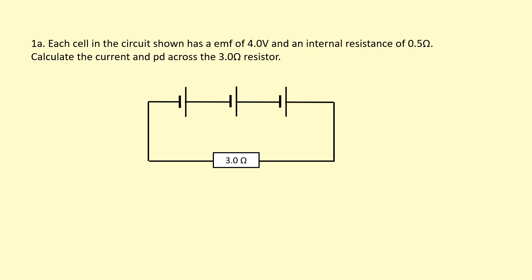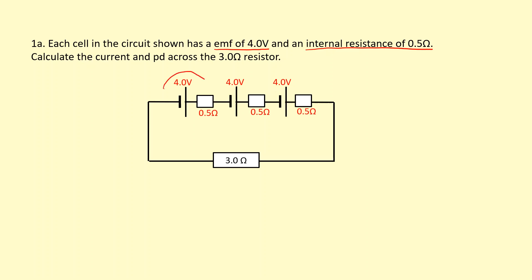Each cell in the circuit shown has an EMF of 4.0 volts and internal resistance of 0.5 ohms. Calculate the current and PD across the 3-ohm resistor. These three cells are in series with each other. Think of it as each time a charge goes through the cell it will gain 4 volts of energy, so the total EMF — because it has to go through all those cells — is going to be 4 times 3, which is 12 volts.